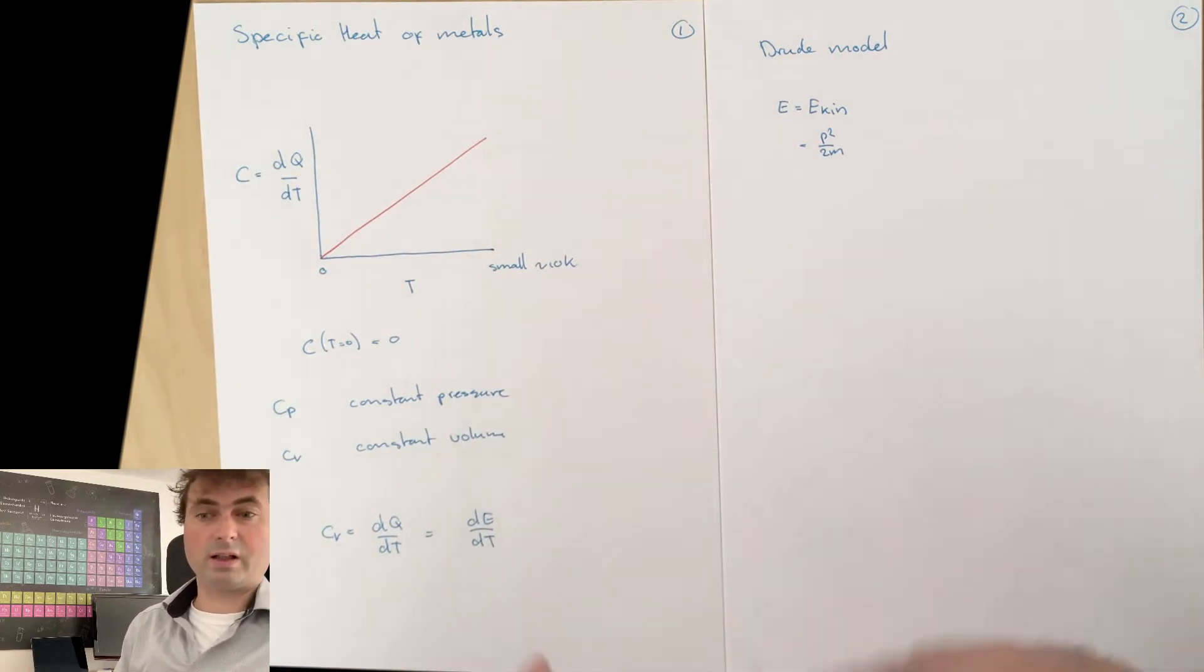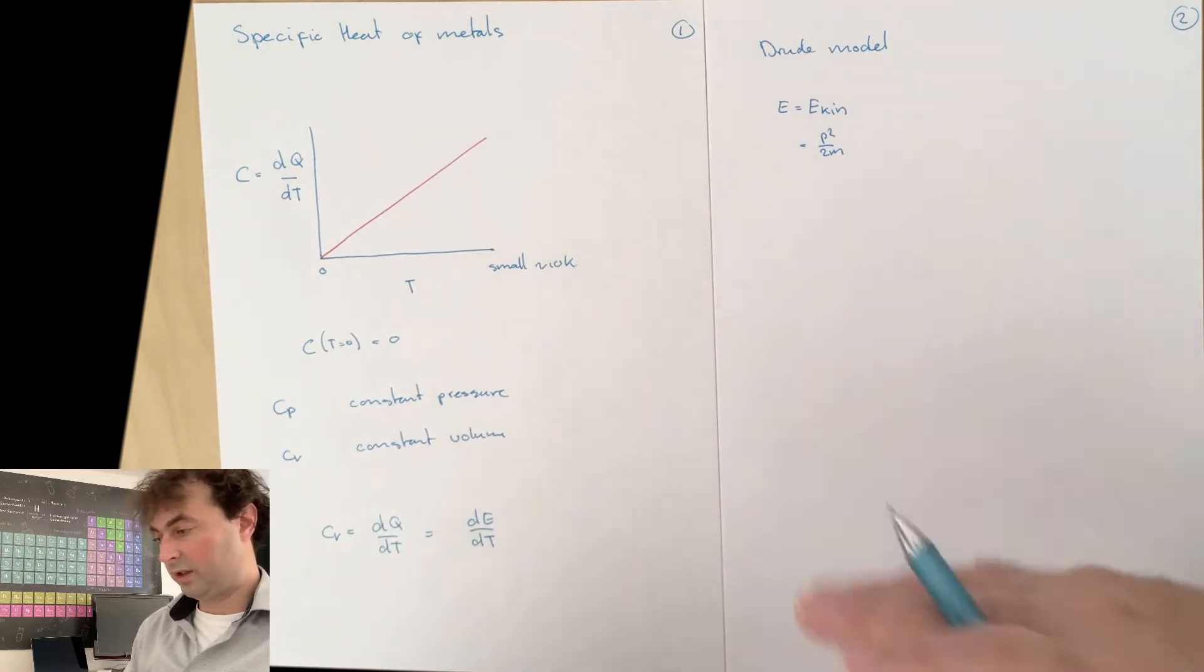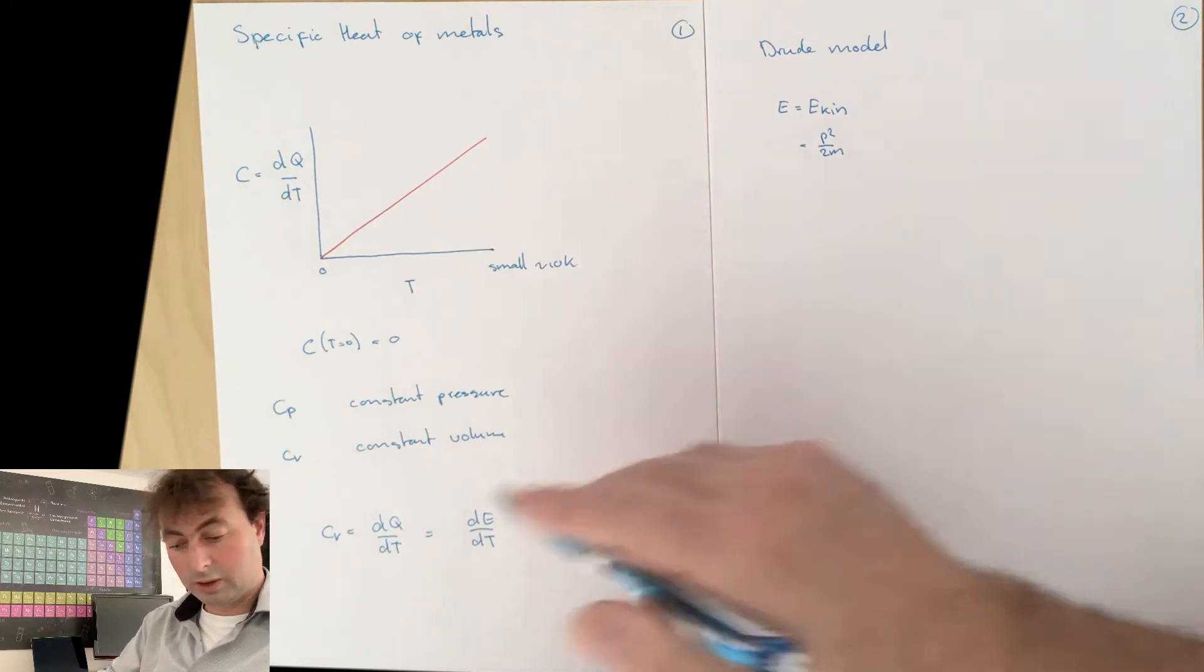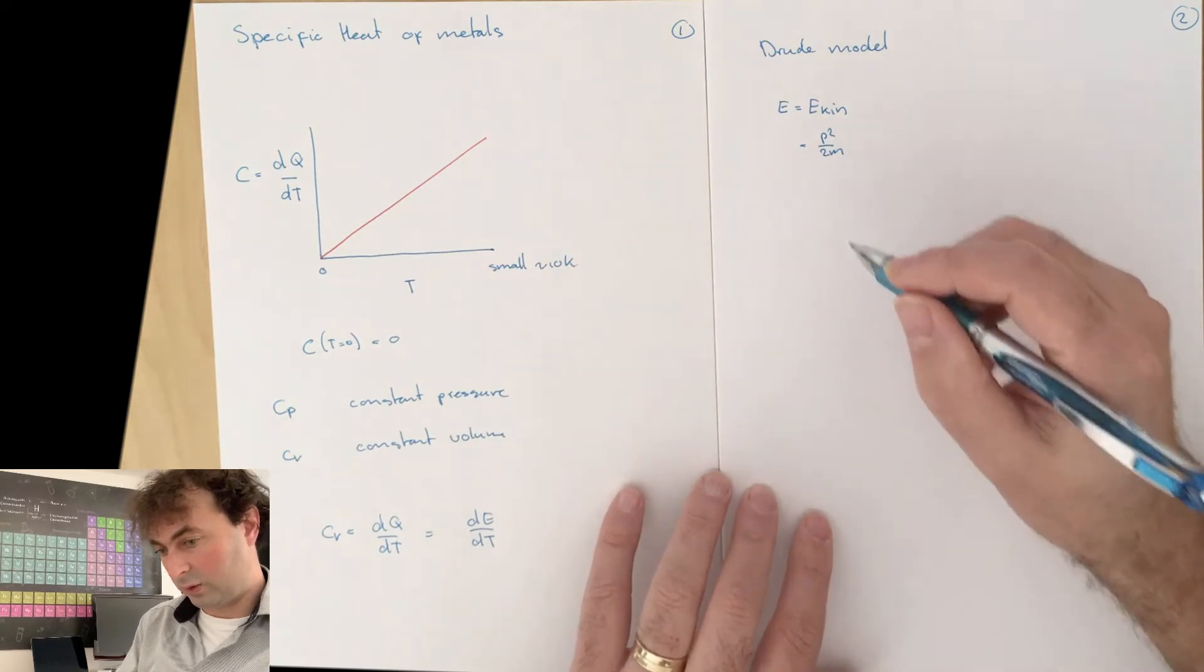We talk here about the kinetic energy per electron. If you have an atom where each atom provides one free electron, then it's per atom. And then you know the volume per atom or the mass per atom, so you can also express this as per volume or per mass unit.